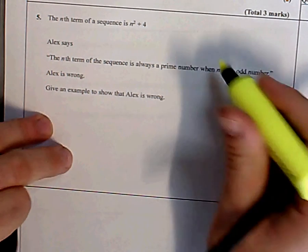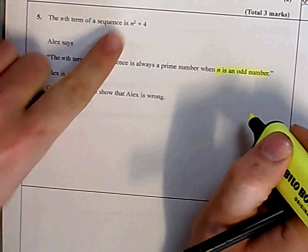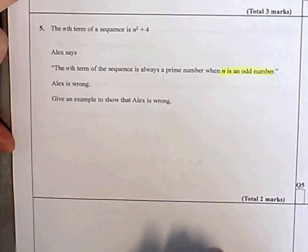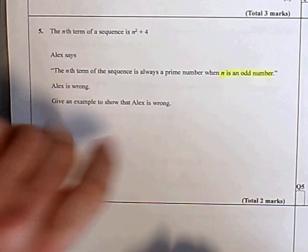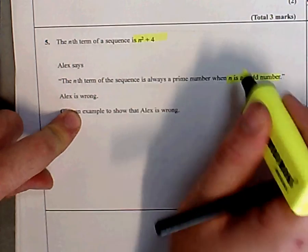n is going to be an odd number, so you're going to put odd numbers into this formula here. Alex reckons when you put an odd number into this formula, the answer is going to be prime every time.